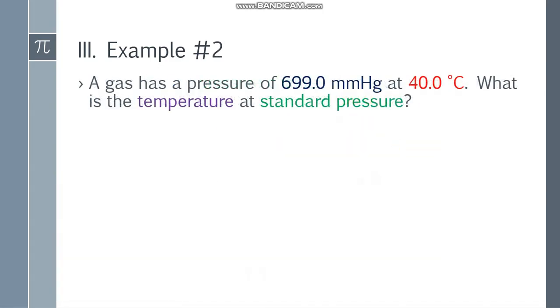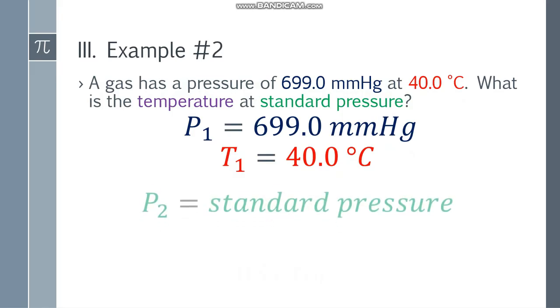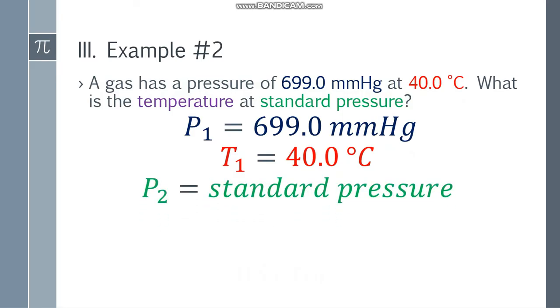Example number 2: A gas has a pressure of 699.0 mmHg at 40 degrees Celsius. What is the temperature at standard pressure? So P1 is 699.0 mmHg, T1 is 40.0 degrees Celsius, P2 is standard pressure, and T2 is x.